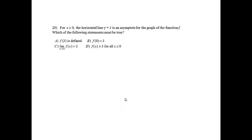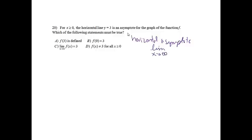Number 20: for x greater than or equal to 0, the horizontal line y equals 3 is an asymptote for the graph of f. The definition of a horizontal asymptote means we find the limit as x approaches infinity. If y equals 3 is a horizontal asymptote, then the limit as x approaches infinity must equal 3. Looking at the answer choices, C is correct — we care about what's happening as x approaches infinity, not what happens at x equals 3.